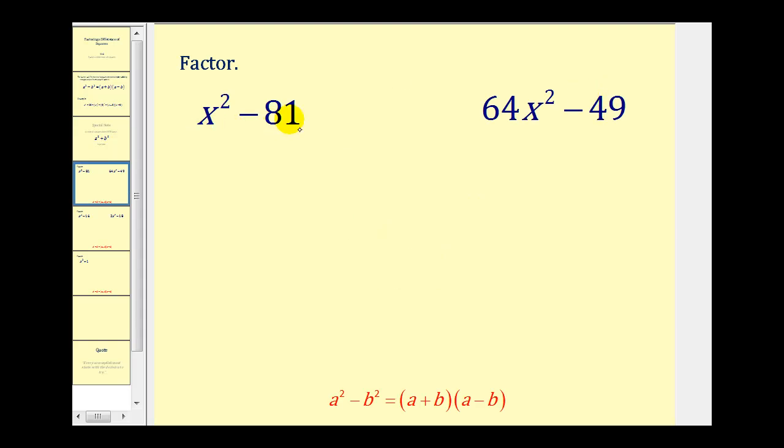So if we want to factor x² minus 81, we should recognize the first term is a perfect square, the second term is a perfect square, and we have a difference. And since 9² is equal to 81, one factor will be x plus 9, and the other factor will be x minus 9.